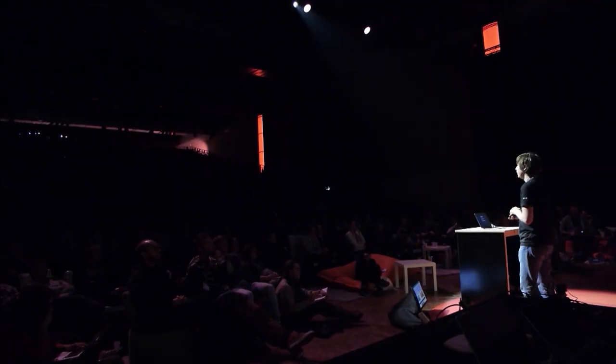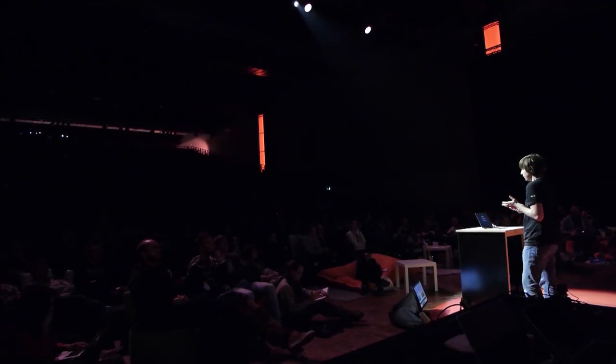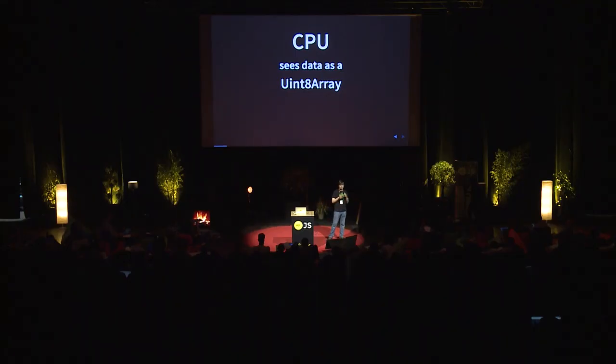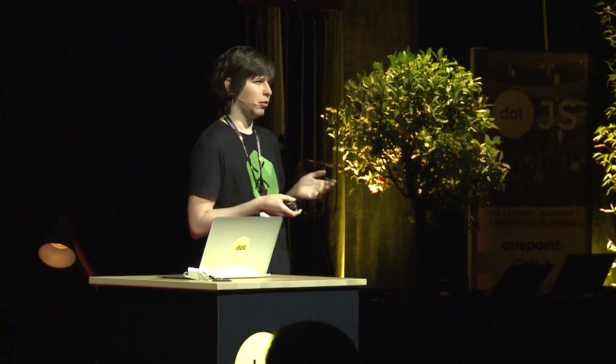The CPU, on the other hand, sees things completely differently. It sees memory — a big chunk of it — as a big buffer or uint8 array. It can read bytes and store them after updates. It can walk through this memory and do many things. Usually, it operates on so-called machine words, which on 64-bit architecture are 8-byte sequences, or just 64-bit numbers.